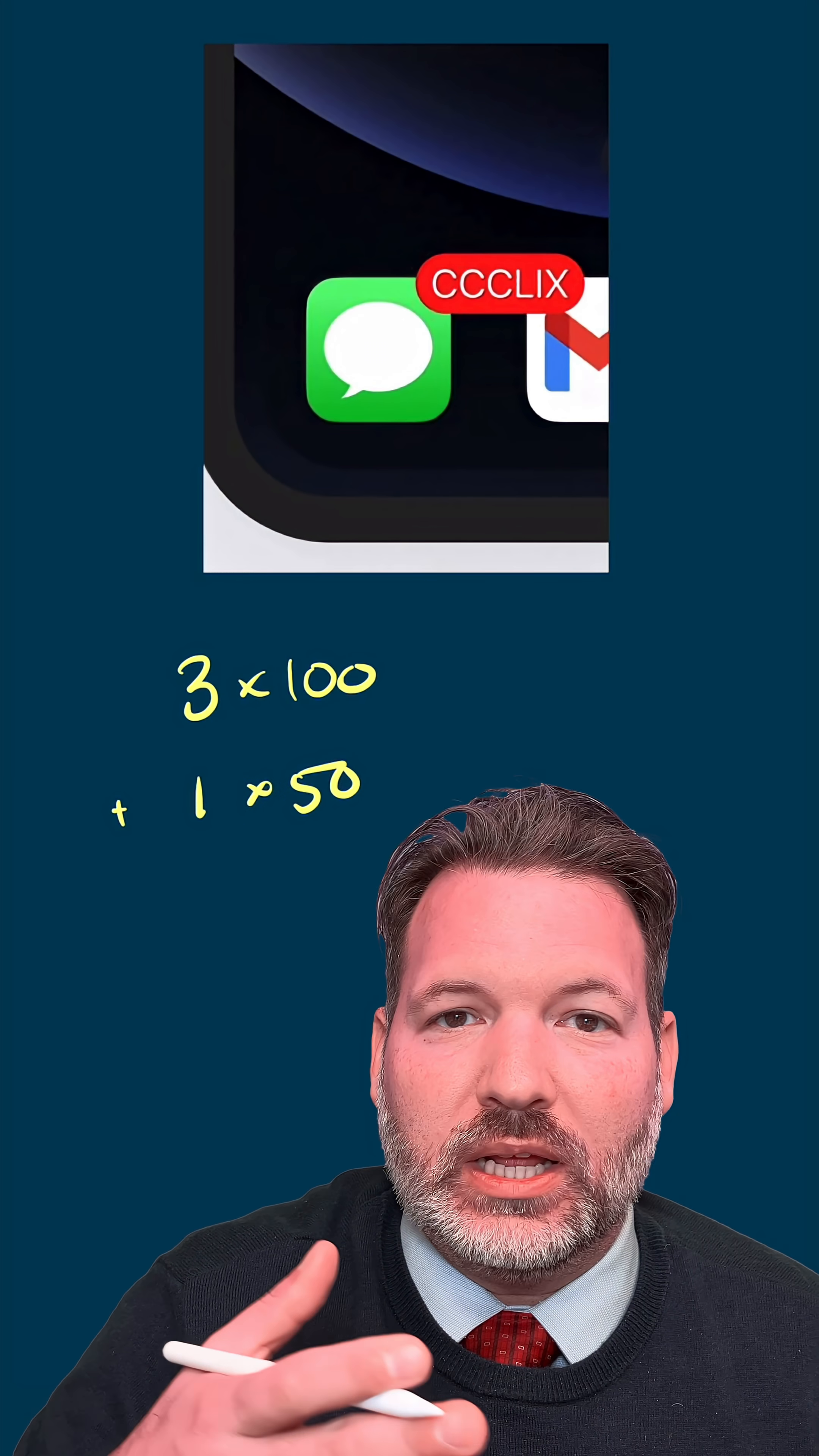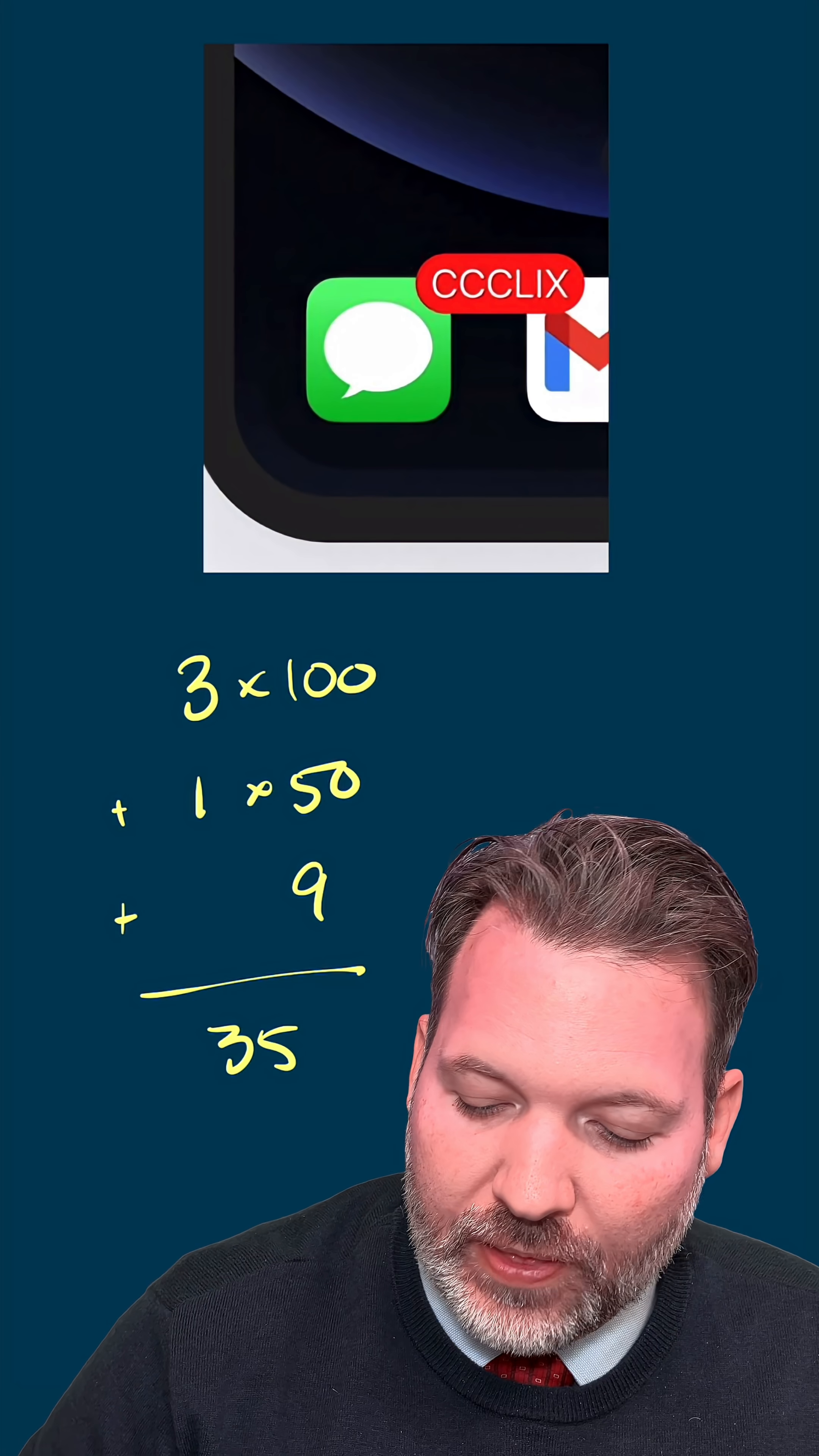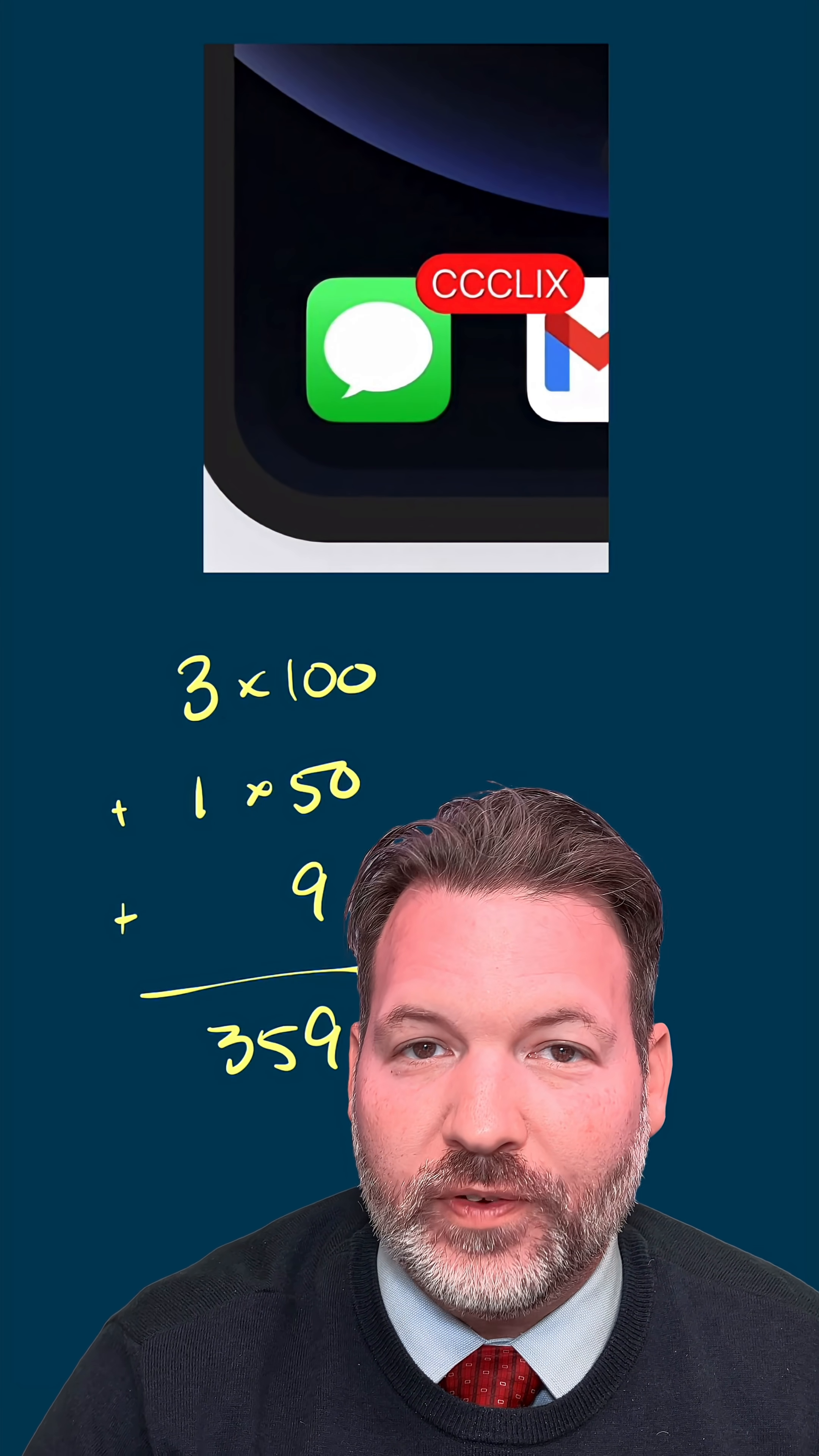I have a smaller symbol preceding a larger symbol. I stands for 1, X stands for 10. I'm actually supposed to subtract those, so we're going to add on an additional 9 here, and then finally we get the result 359. CCCLIX is the same as 359.